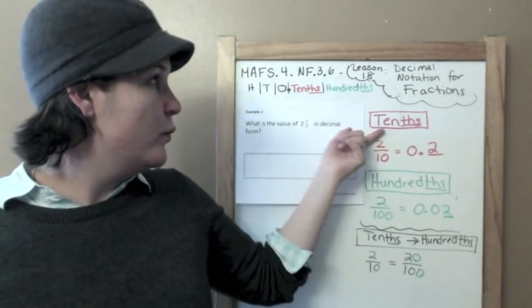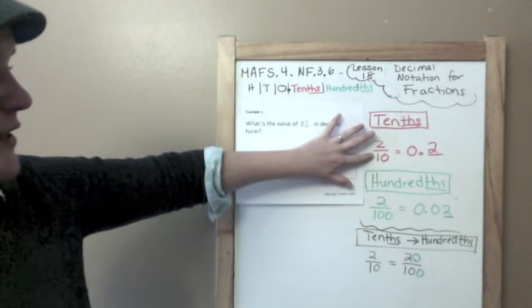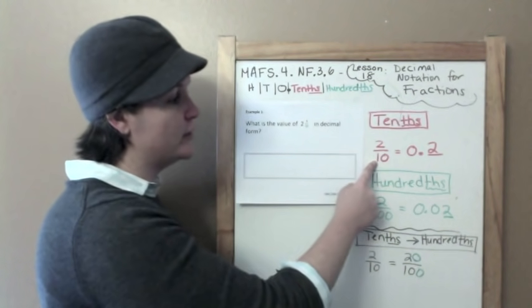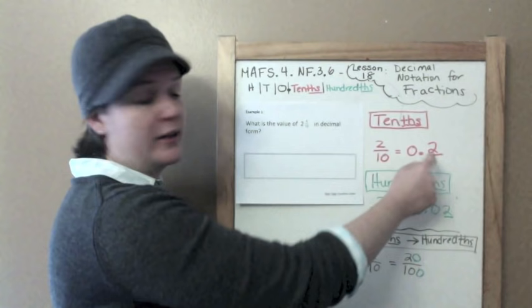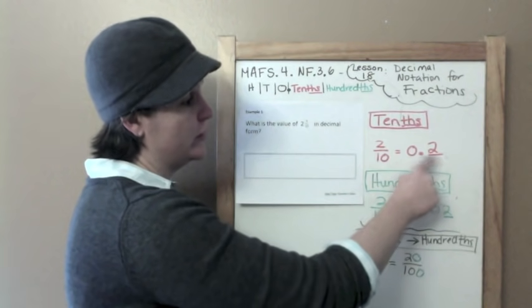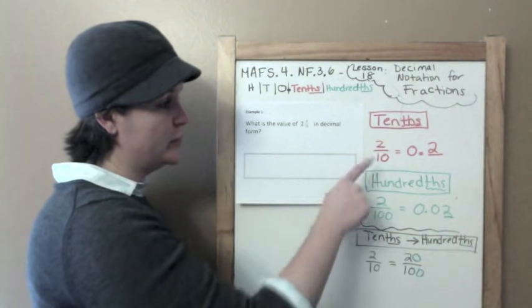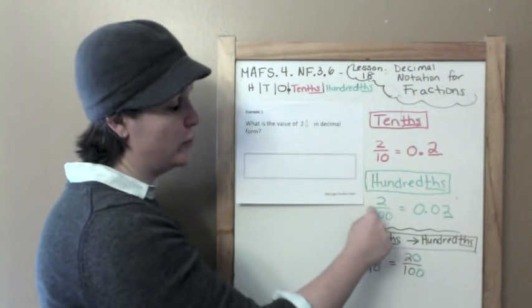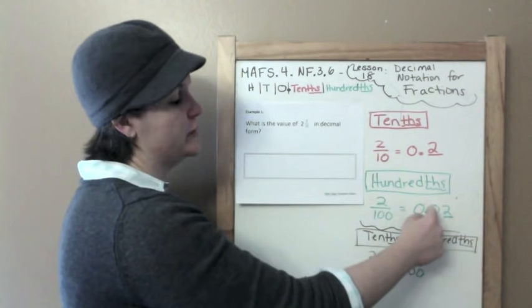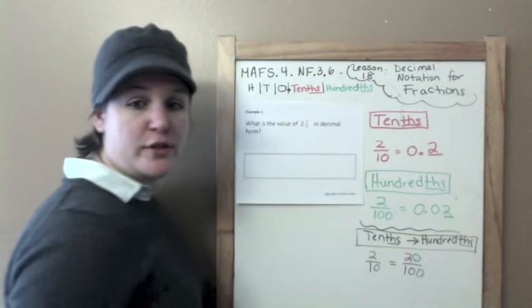Now, when we are writing decimal notation for fractions, we're going to be working with the tenths and the hundredths place. So two-tenths, if it's a decimal, will now be written as zero for the ones place, decimal point, two, zero point two, because two is in the tenths place, two tenths. And for the hundredths, if we had two hundredths, we would go zero, decimal, zero, because we don't have any tenths, but we do have a hundredth. So zero point zero two.